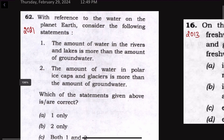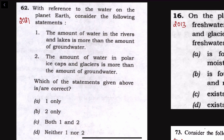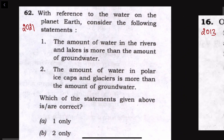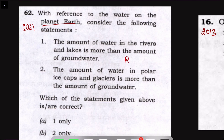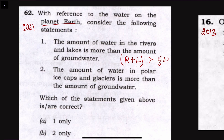This particular question was asked in 2021: 'With reference to the water on planet Earth, consider the following statements.' Statement one: the amount of water in rivers and lakes is more than the amount of groundwater. Statement two: the amount of water in polar ice caps and glaciers is more than the amount of groundwater. So both statements are comparing cumulative amounts against groundwater.